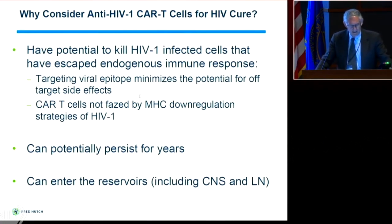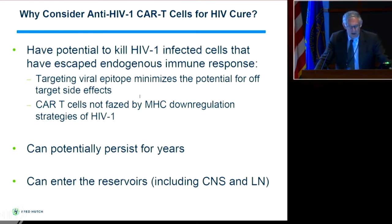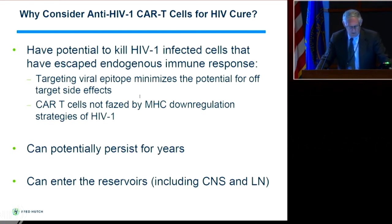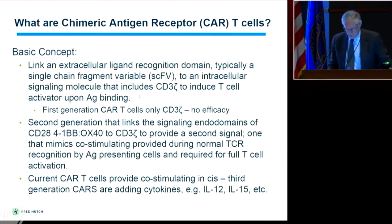Why consider anti-HIV CAR T-cells for HIV cure? It has the potential to kill HIV-infected cells that have escaped endogenous immune responses. Targeting viral epitopes minimizes potential off-target side effects. Our CAR T-cells are not phased by MHC down-regulation strategies of HIV-1. They can potentially persist for years — studies in oncology as well as initial HIV studies suggest so — and they can enter the reservoirs including the CNS and lymph nodes, although we'll need to modify them from a trafficking point of view.